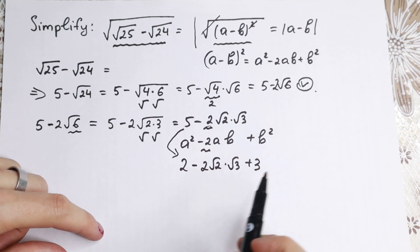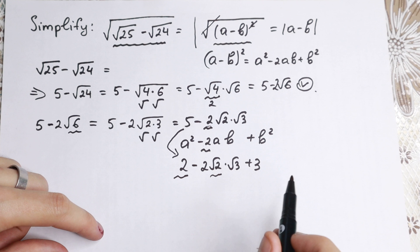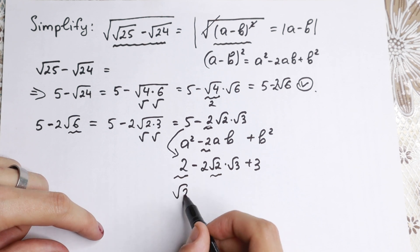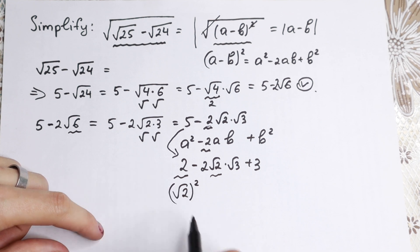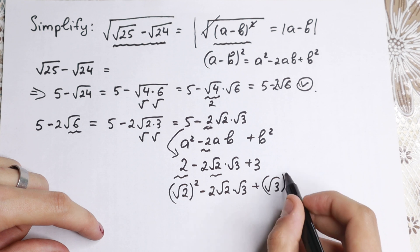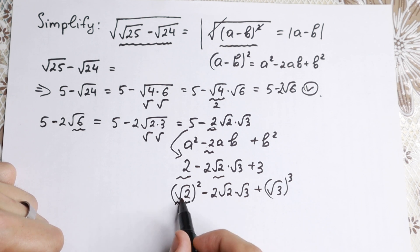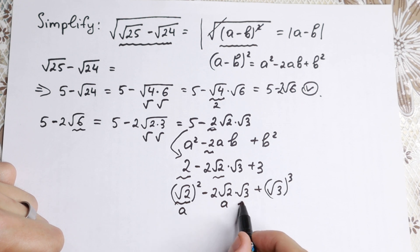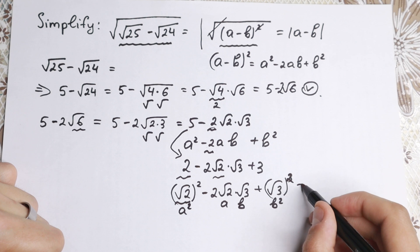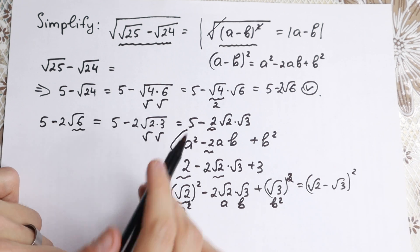Now I want you to see that this looks like our formula a squared minus 2ab plus b squared. We have 2 and we have 2 in the middle term. We can write the 2 as (square root of 2) squared, and similarly the 3 as (square root of 3) squared. So we have (square root of 2) squared minus 2 times square root of 2 times square root of 3, plus (square root of 3) squared — and as you can see, this matches the formula. It equals (square root of 2 minus square root of 3) all squared.